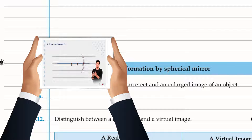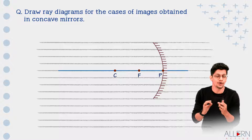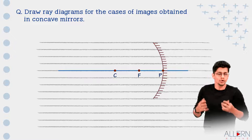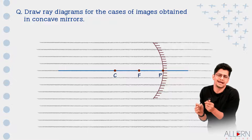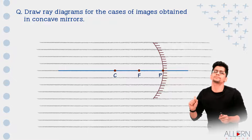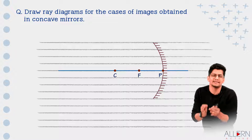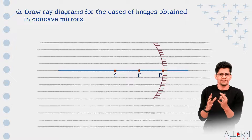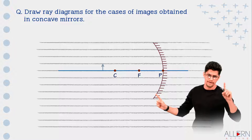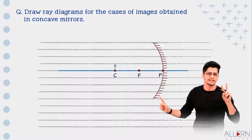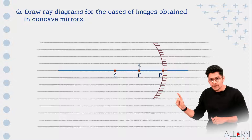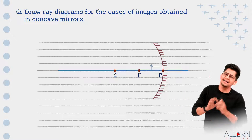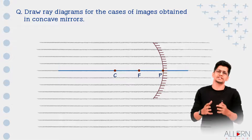Now we are supposed to draw the ray diagrams. For a concave mirror, how many ray diagrams can we draw? We can draw six ray diagrams for a concave mirror. There are six possibilities because the object placed in front of a concave mirror can be at six locations: beyond center of curvature, at center of curvature, between center of curvature and focus, at focus, between focus and the pole, and at infinity.